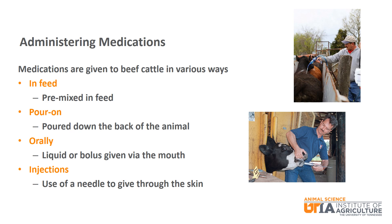Some medications are given orally. This could be a liquid that is squirted into the mouth of the animal or added to the drinking water, or could be a bolus administered with a balling gun. There are examples that include antibiotics and dewormers among many others.